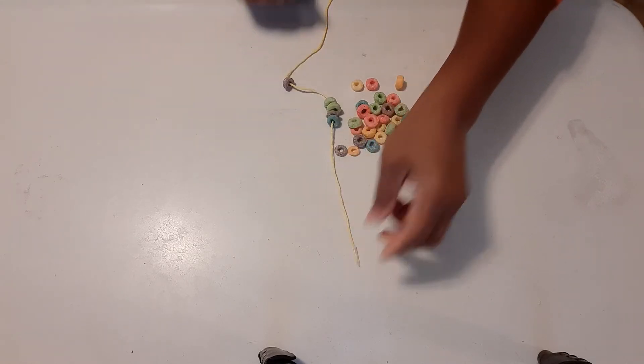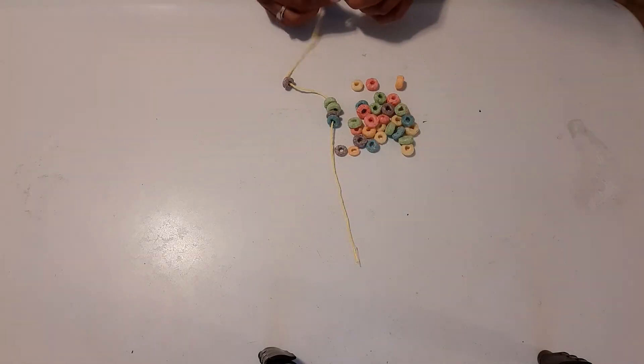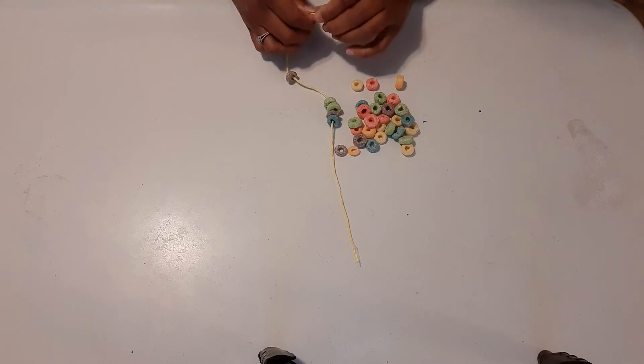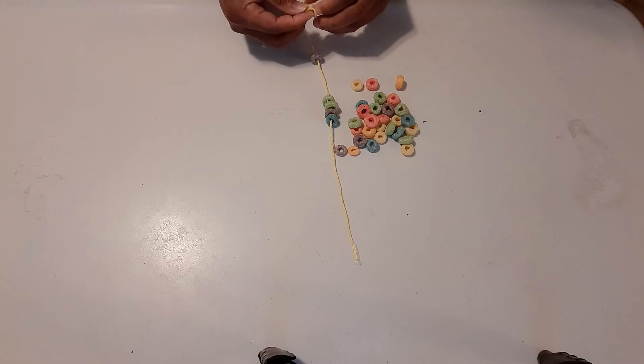Fill it up as much as you can and make sure you put a little knot in the bottom of your string so that your cereal doesn't fall off. You might want to tie two or three times so that the knot is big enough that it won't come through the hole of the cereal.